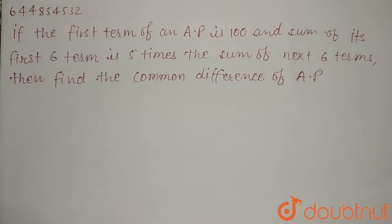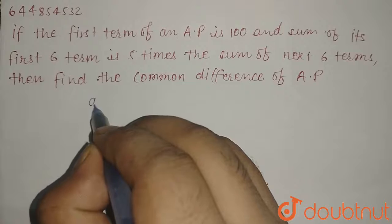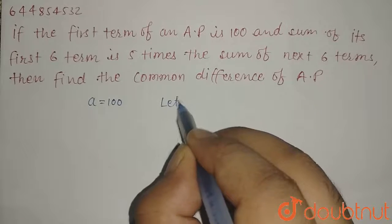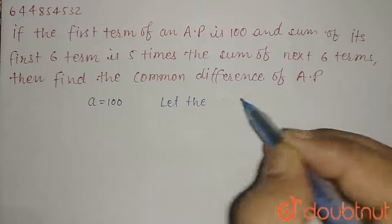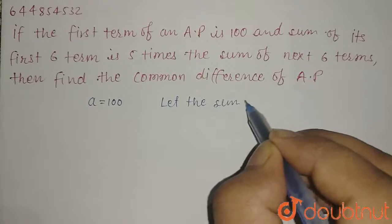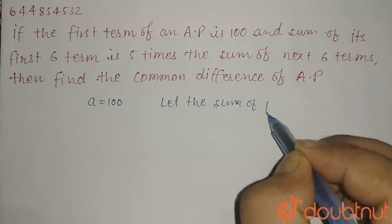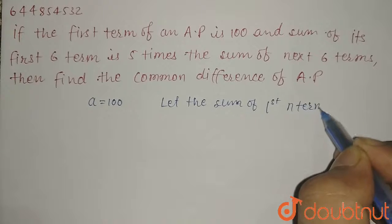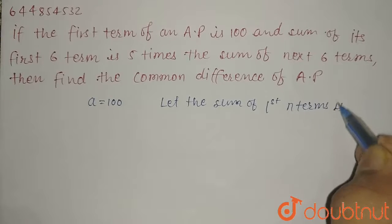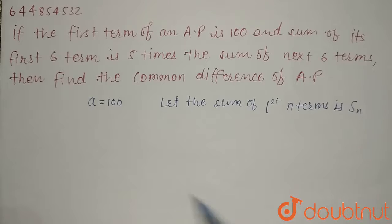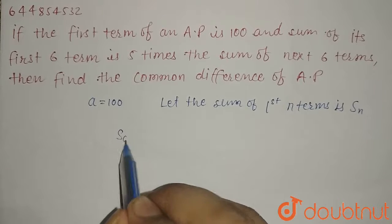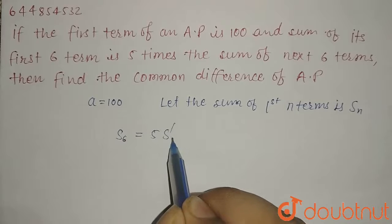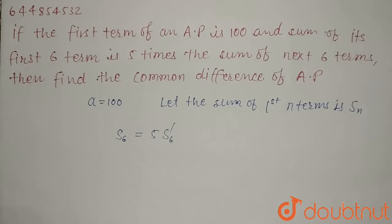Now it is given that a equals 100. Let the sum of first n terms be S_n. Now it is given that S_6 equals 5 times S'_6, where S'_6 is the sum of next 6 terms.